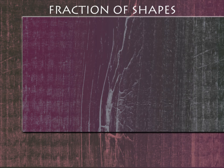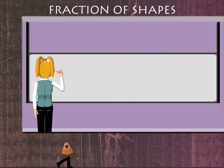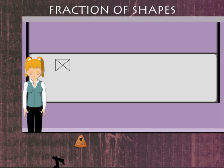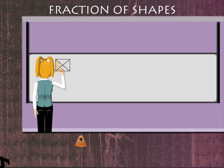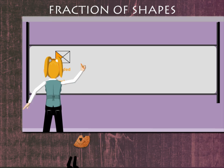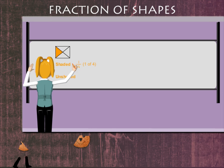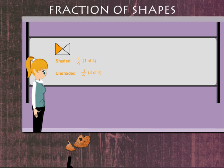Fraction of shapes. Teacher Nancy has some shapes to show. She draws an envelope and shades one of the four equal parts. The shaded part is one-fourth and the unshaded is three-fourth.